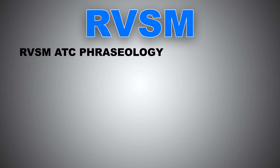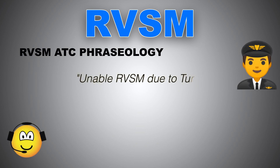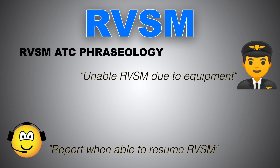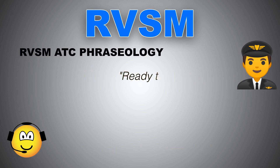If a pilot reports severe turbulence or weather affecting the ability to maintain RVSM height-keeping requirements, the pilot will report: 'Unable RVSM due to turbulence' or 'Unable RVSM due to equipment degradation.' ATC will then request the pilot to report when able to resume RVSM: 'Report able to resume RVSM.' Once the issue is resolved — turbulence has passed or equipment is restored — the pilot will respond: 'Ready to resume RVSM.'